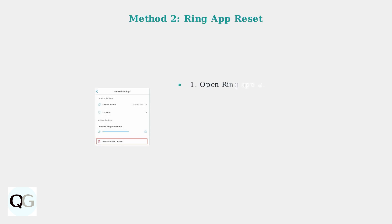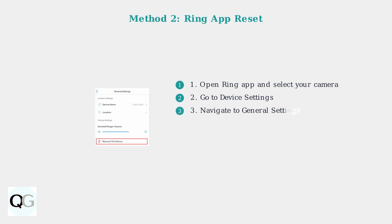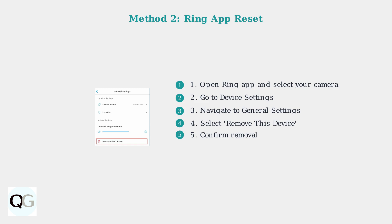Method 2 uses the Ring Mobile app. Open your Ring app and select your Floodlight Camera Pro. Navigate to Device Settings, then General Settings. Look for the red Remove This Device button and select it. Confirm the removal when prompted. This method automatically resets the device to factory settings and is ideal when transferring ownership.